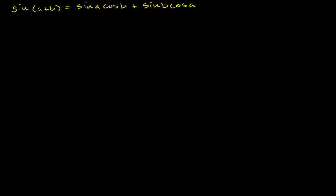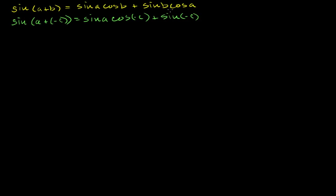If we want to know the sine of a plus minus c — which is the same thing as a minus c — we could just use this formula to say that's equal to the sine of a times the cosine of minus c, plus the sine of minus c times the cosine of a. And another assumption we need going into this video is that the cosine of minus c is equal to just the cosine of c — that the cosine is an even function.